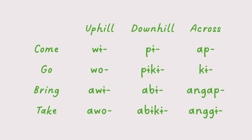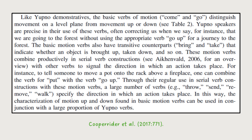Motion verbs also make this distinction. Words which correspond to the English come, go, bring, and take each have three different forms, indicating whether the motion is uphill, downhill, or across the hill. These verbs are then able to combine with other verbs to show the direction of different motions.